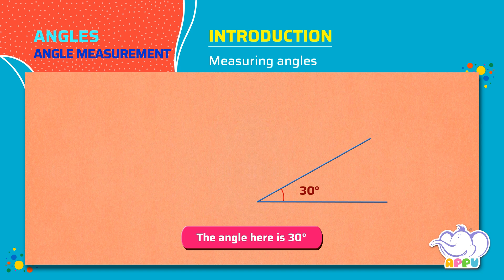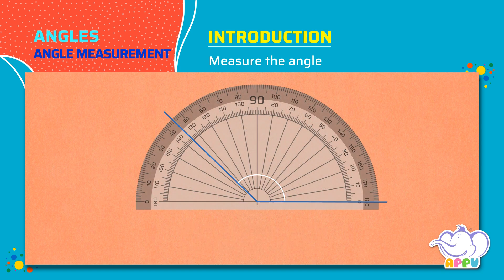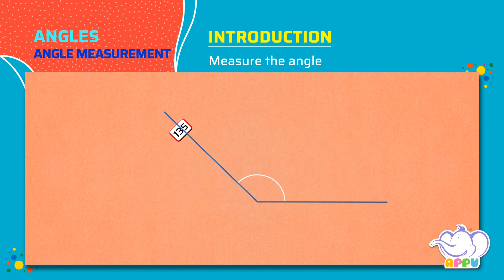Let's see another example. Place the midpoint of the protractor on the vertex of the angle. Line up one side of the angle with the zero line of the protractor. We see that the number on the protractor corresponds to 135. So the angle here is 135 degrees.